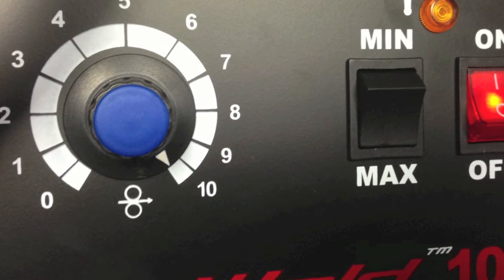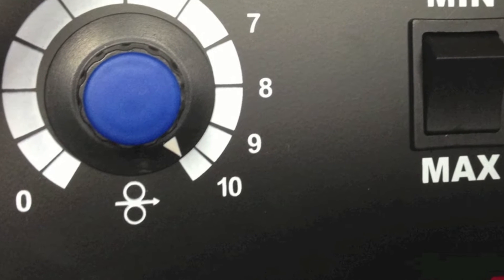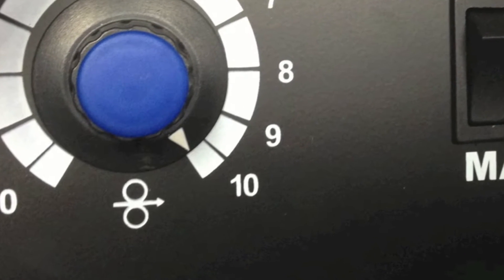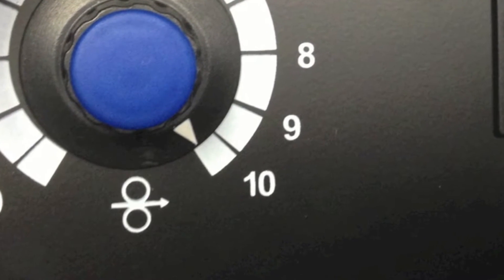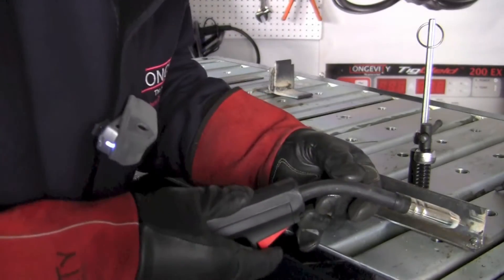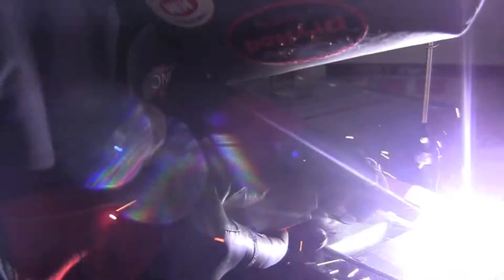So the toggle switch for voltage is set to max and then I turn the wire feed speed to 10. So start your stopwatch and let's see how long until that machine kicks out from the thermal overload.